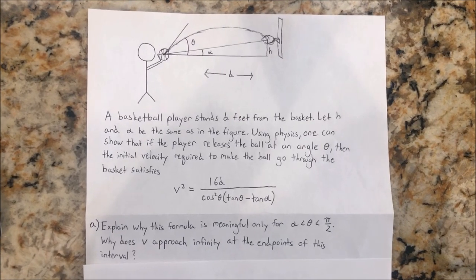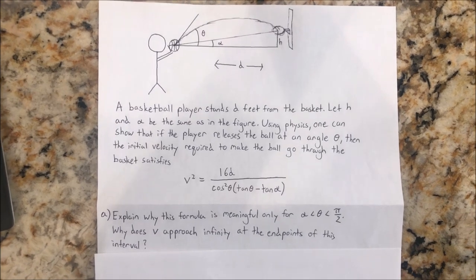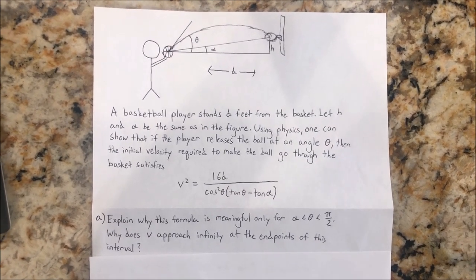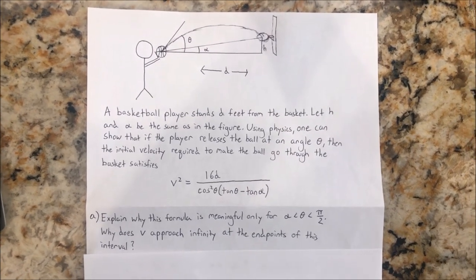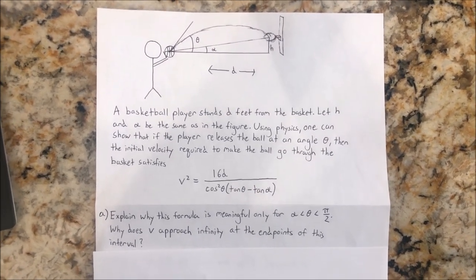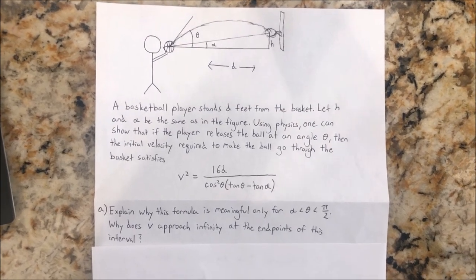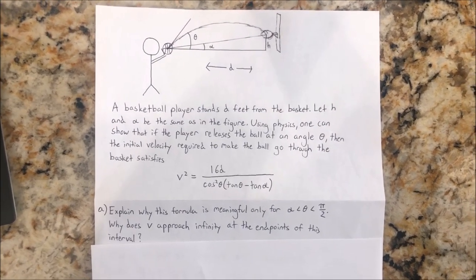Alright, so here's the setup for our optimization basketball problem. A basketball player stands d feet from the basket. Let h and alpha be the same as shown in the figure above. Using physics, one can show that if the player releases the ball at an angle theta, then the initial velocity required to make the ball go through the basket satisfies v squared is equal to 16 times the distance over cosine squared theta times tan theta minus tan alpha.